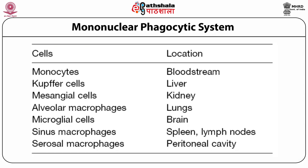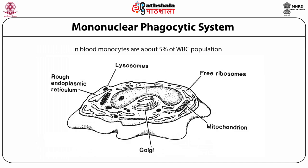The mononuclear phagocytic system consists of tissue-bound matured monocytes, and was earlier called the reticuloendothelial system. The cells of this system are named depending on their location: in the bloodstream they are monocytes; in the liver, Kupffer cells; in the kidney, mesangial cells; in the lungs, alveolar macrophages; in the brain, microglial cells; in the spleen and lymph nodes, sinus macrophages; and in the peritoneal cavity, serosal macrophages. The German scientist Ludwig Aschoff, upon observing that carbon particles injected into an animal distributed into certain cells all over the body, called these cells the reticuloendothelial system.